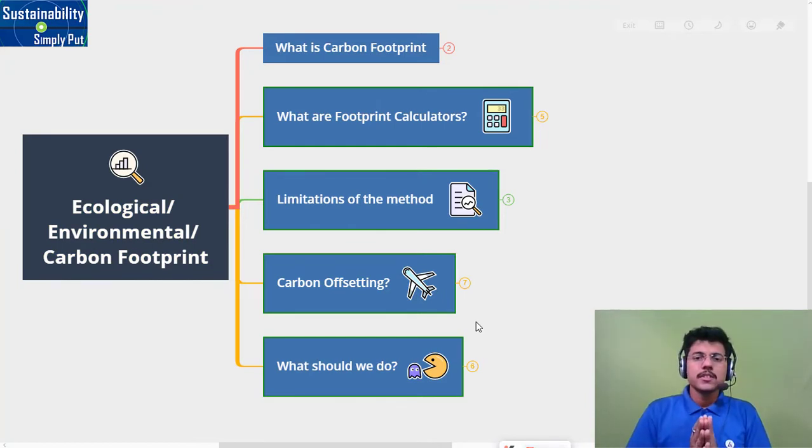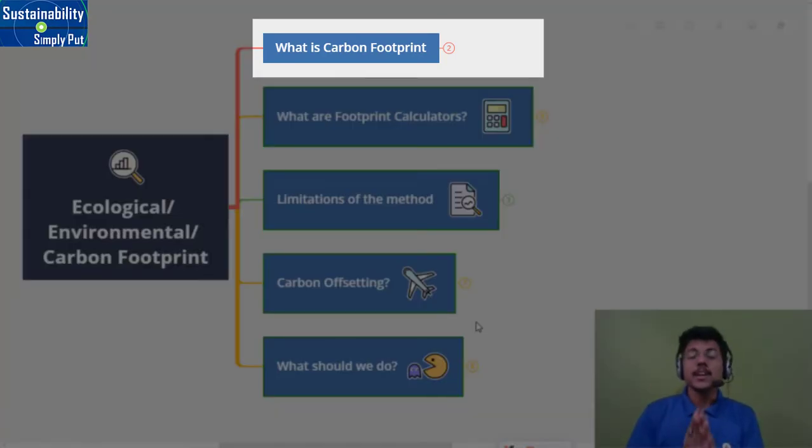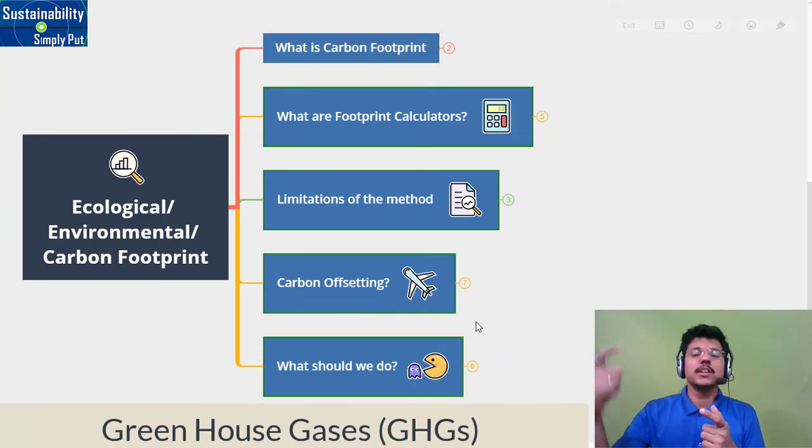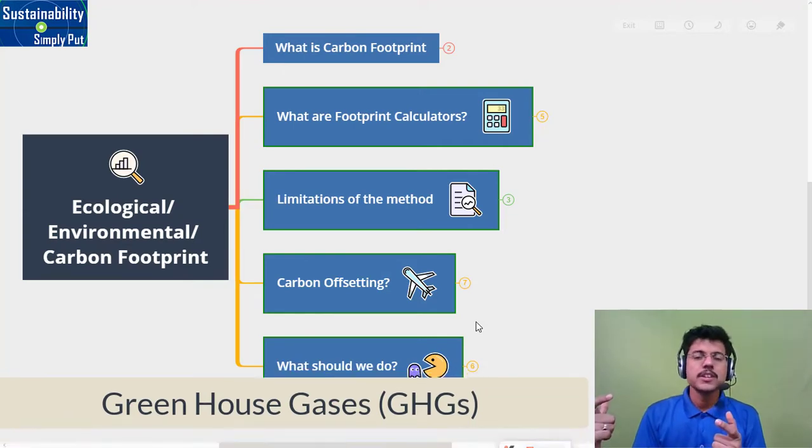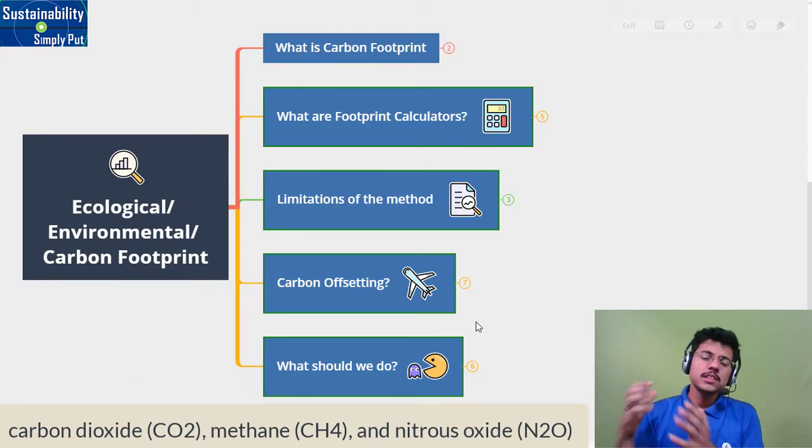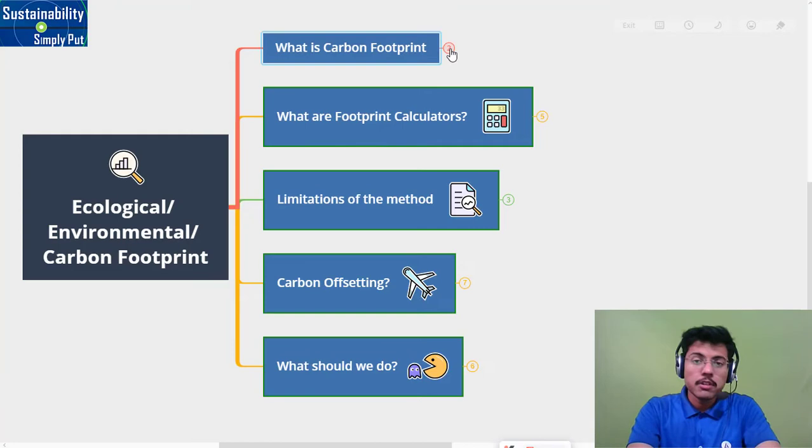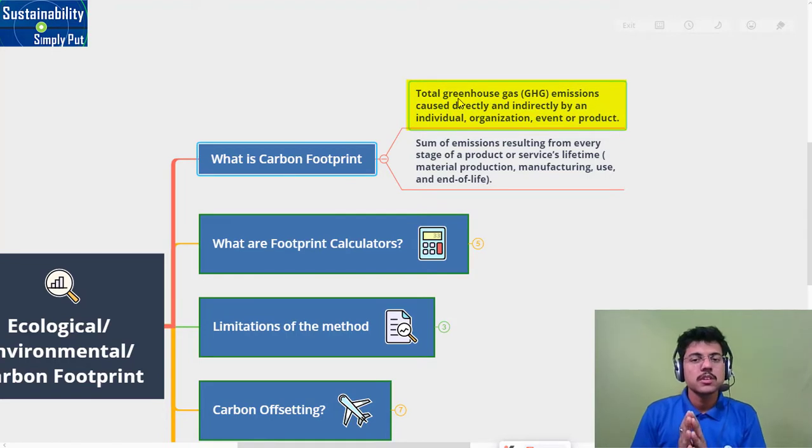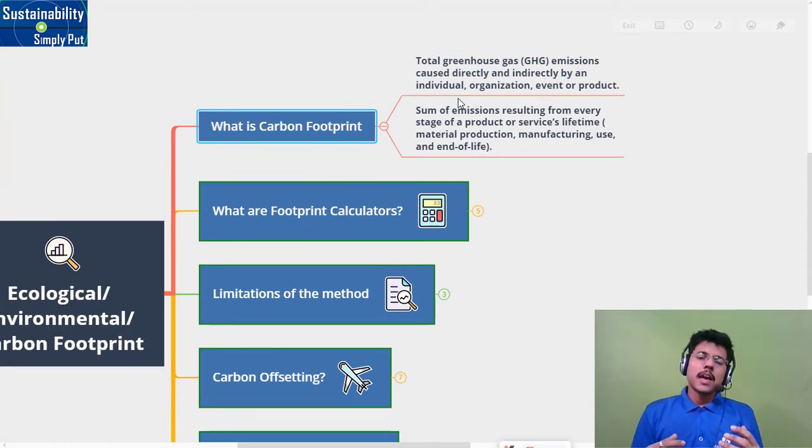First, to start with, what exactly is carbon footprint? We as human beings or any animal require some energy, some resources that we consume which are emitting greenhouse gases (GHGs) - whether it can be carbon dioxide, methane, or nitrous oxides. These greenhouse gases are emitted due to our activities. The carbon footprint talks about the total greenhouse gas emissions caused directly or indirectly by the individual, organization, event, or product.